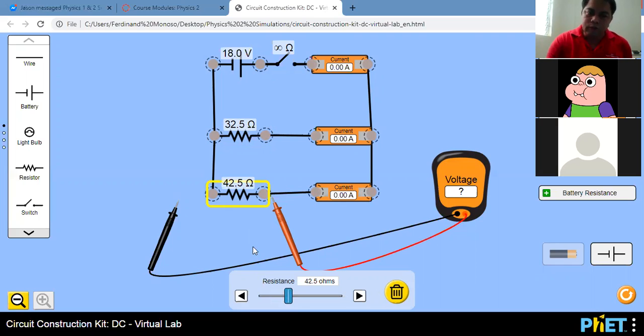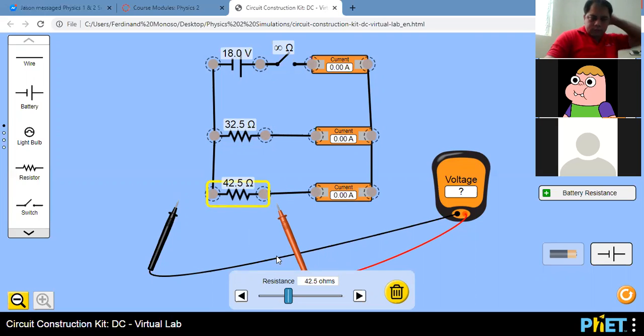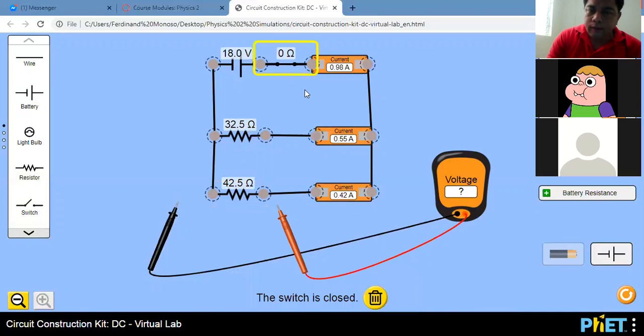And 44. We have 42.5 for R2. Okay, let's energize our last trial, and please take note of our current. Total current, and this is I1, 0.55, and I2, which is 0.42.